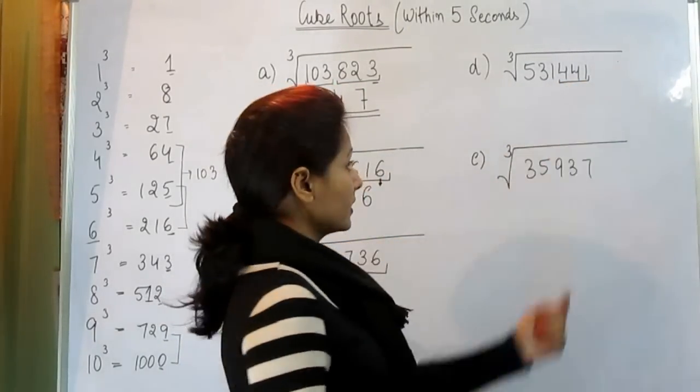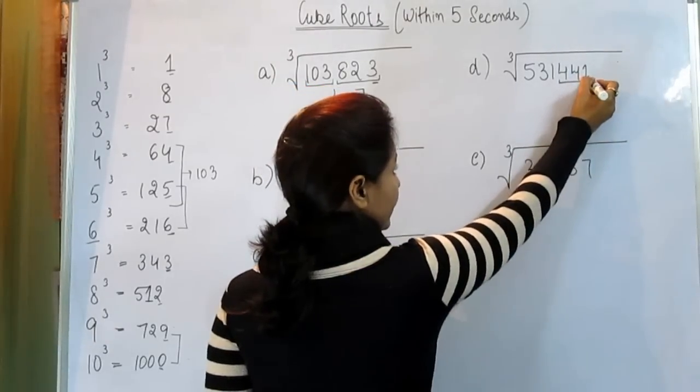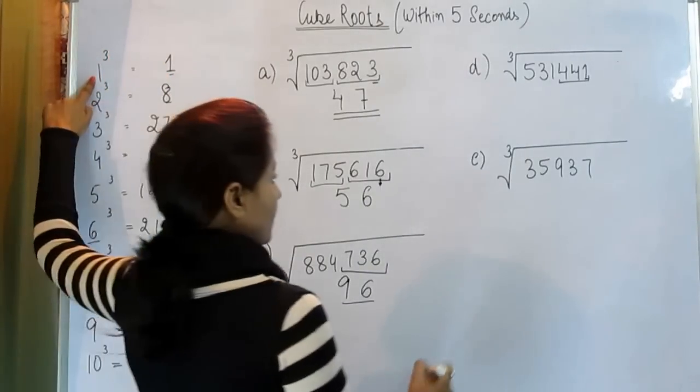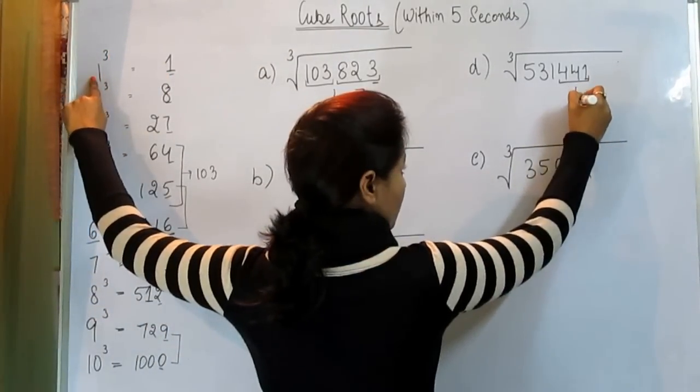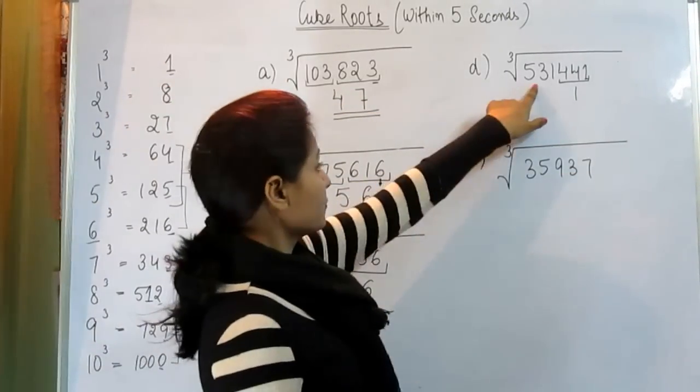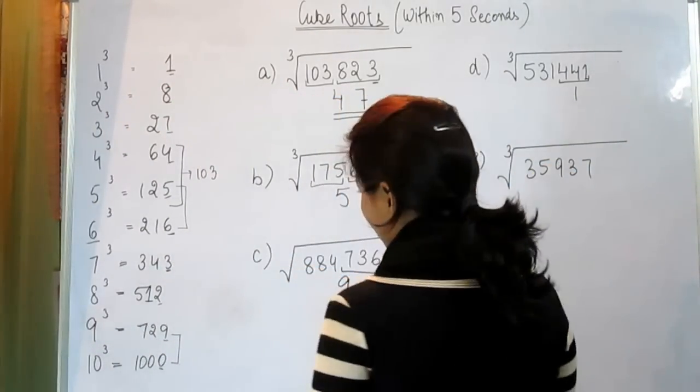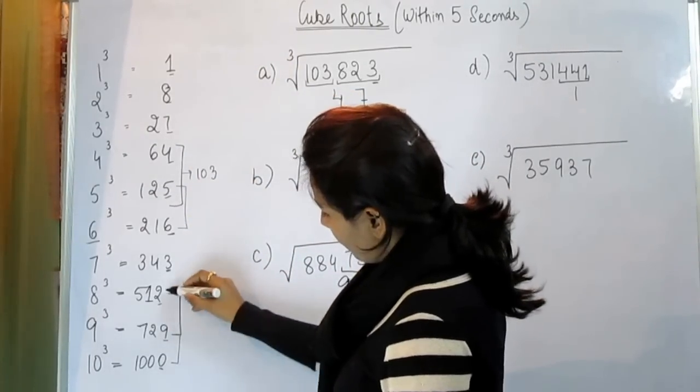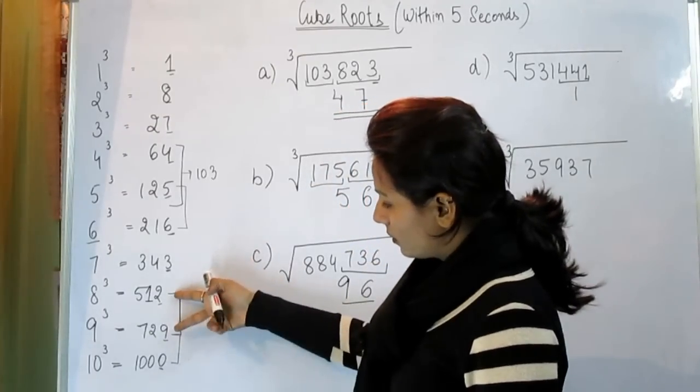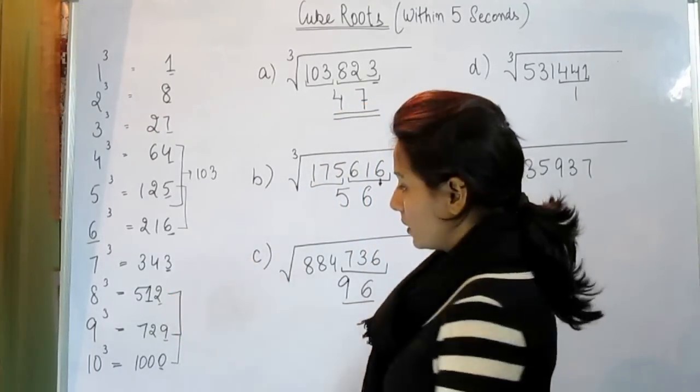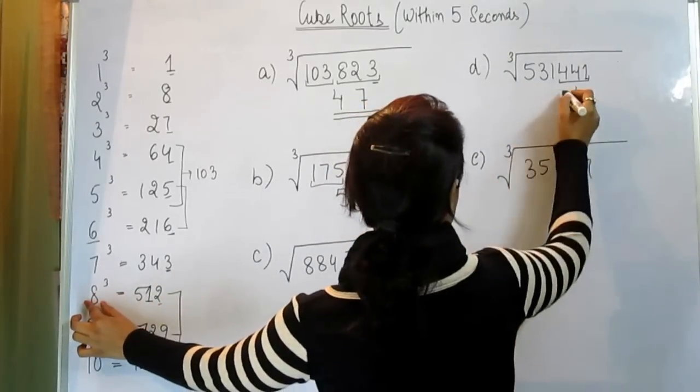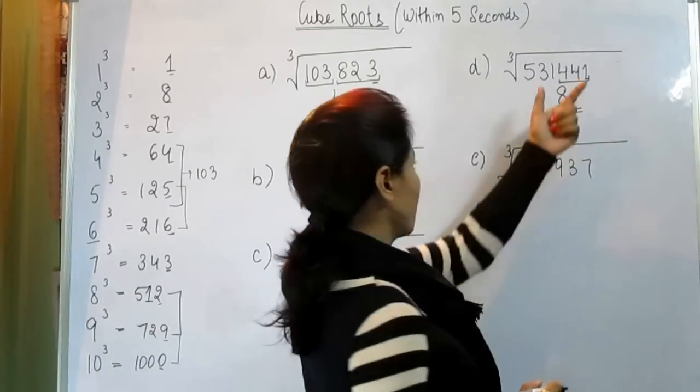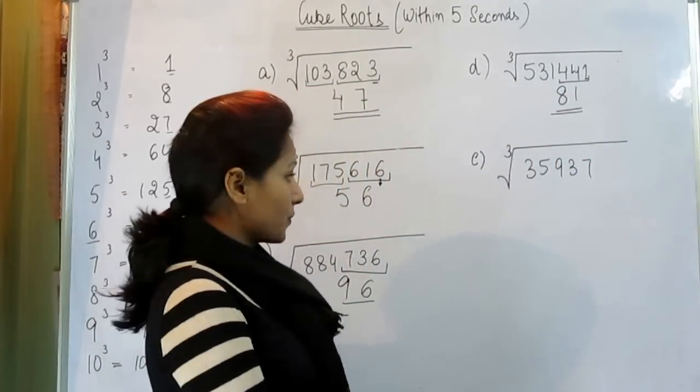Likewise, we have this number. Now here is 1 at the end. Where is 1? There is 1. 1 is the cube root of 1. 531 comes between these two numbers. So smallest number is the answer that is 81. 3 times 81, when you do, you will get this answer.